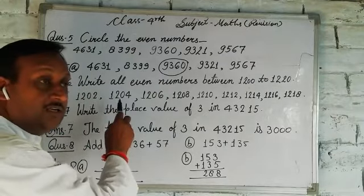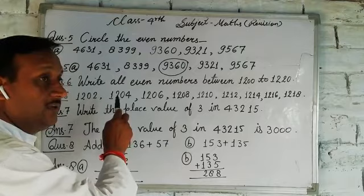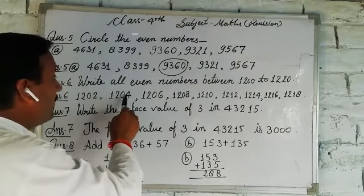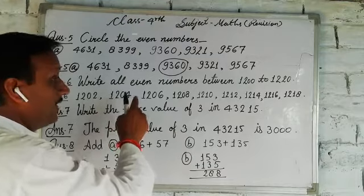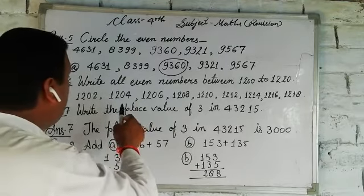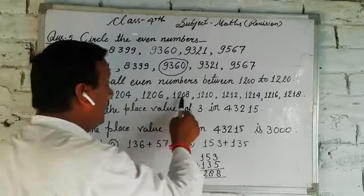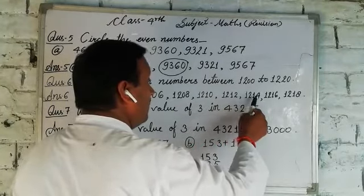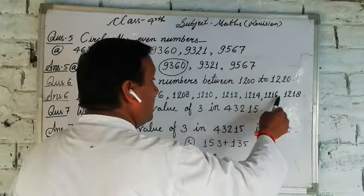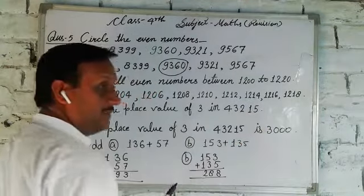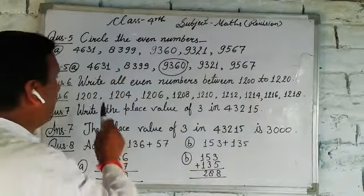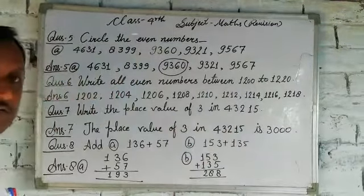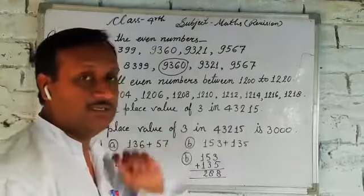1202, 1204, 1206, 1208, 1210, 1212, 1214, 1216, 1218, 1220. So you can read it.